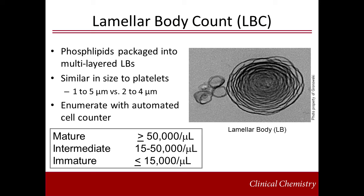Lamellar bodies are packages of phospholipids that are made by the type 2 pneumocytes in lung alveoli. The most recent fetal lung maturity test was developed in the mid-1980s when it was noted that lamellar bodies were similar in size to blood platelets and could be enumerated using an automated cell counter. Lamellar body count testing is a laboratory-developed test. A hematology analyzer is used to analyze the amniotic fluid in the CBC mode and the lamellar bodies are counted as platelets. Lamellar body counts of 50,000 per microliter or greater suggest pulmonary maturity. However, results are instrument dependent and need to be validated in individual laboratories. Test results are affected by blood and meconium when present in amniotic fluid.